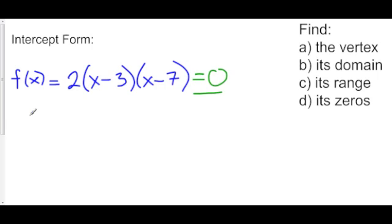I know what they are. My zeros are x equals 3 because that would make this factor 0. Or 7 because that would make that factor 0. Boom. Already got the zeros.